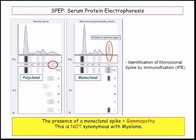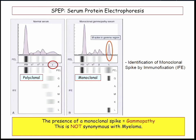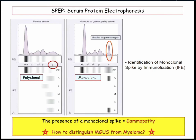Here's an M spike — a monoclonal spike. It's narrow and high. They give us the electrophoresis: it's an IgG of a lambda type — a monoclonal gammopathy. Now, that doesn't tell us the patient has myeloma; it just tells us they have an increased amount of a monoclonal protein. We have to figure out the difference between myeloma and just a gammopathy.